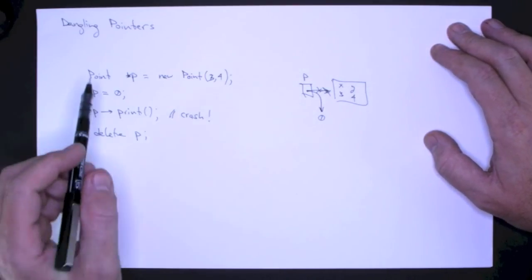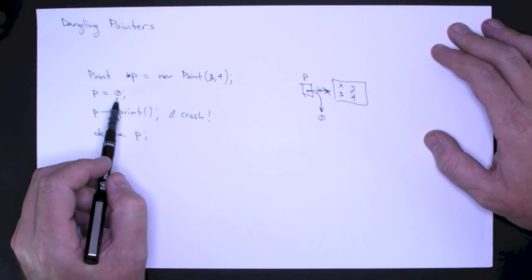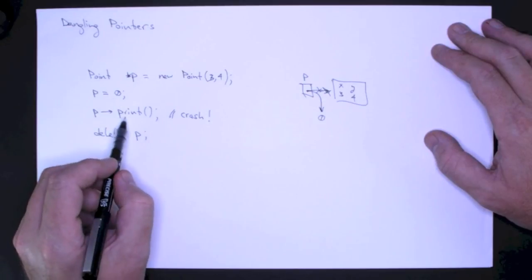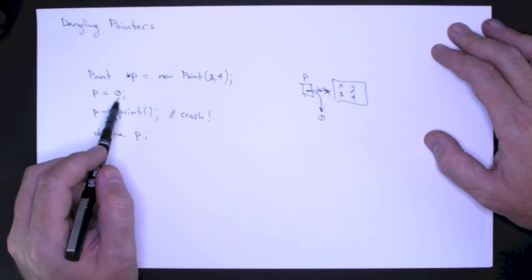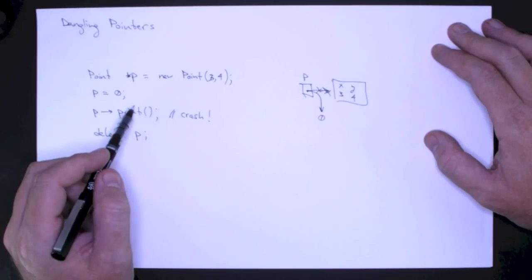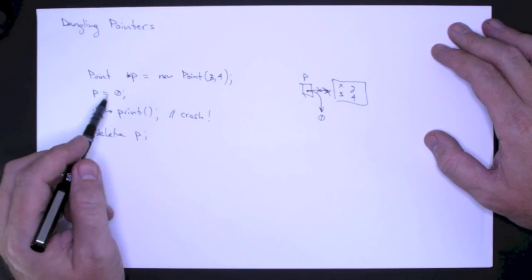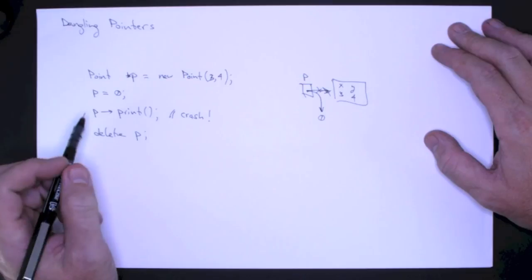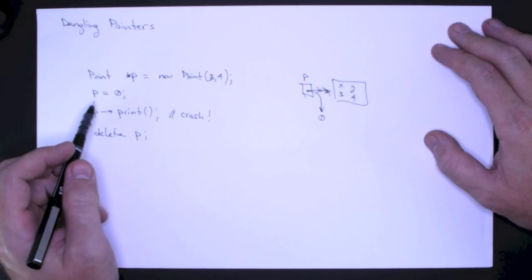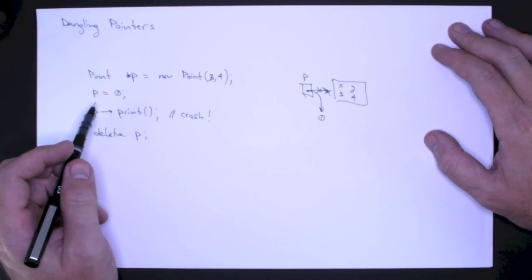So that's a dangling pointer, where you have a pointer, you think it points to some object, but it doesn't. And where this is going to come about is when you've got a complicated program, and you're manipulating these pointers, and the program is going to do something that you weren't expecting.